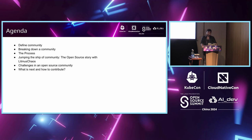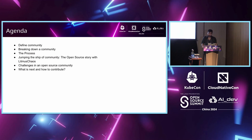Let's talk about the agenda. We'll be defining what a community is, breaking down the community into different aspects. We'll talk about the process of building a community, take the case of the Litmus Chaos community, how that journey has been. And then we'll cover challenges we face in terms of building a community, what's next for Litmus Chaos, and how you can contribute.